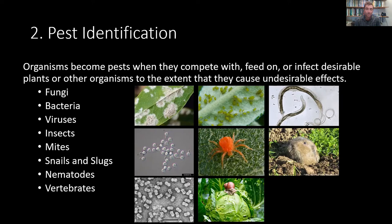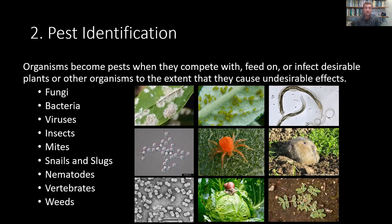Then, of course, we have vertebrates — a broad category of big animals. Gophers, moles, squirrels. In an urban population, you'll have dogs and cats, and we'll even have birds or potentially people, depending on what you're doing and where. There are many methods for dealing with vertebrate pests, and like all of them, prevention and exclusion — not allowing them access — is typically your best bet.